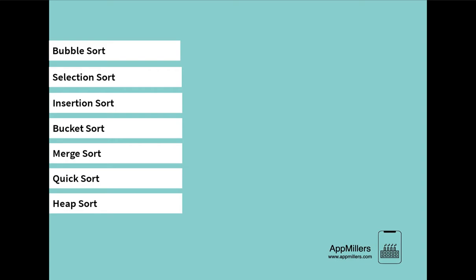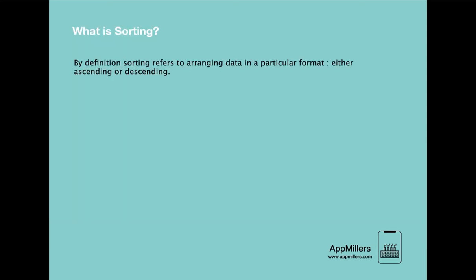In this first lecture, let's learn what is sorting and why we need it. By definition, sorting refers to arranging data in a particular format, either in ascending or descending order. It means we need sorting to sort any given data in either ascending or descending order.